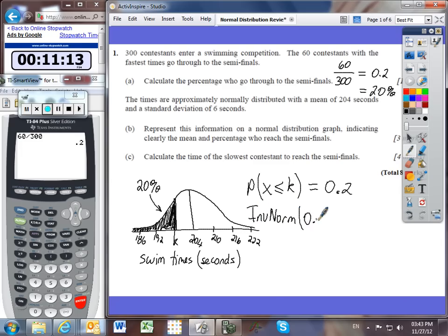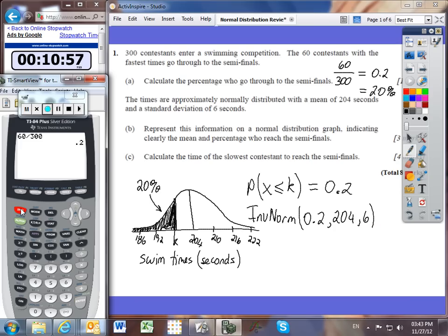We're trying to find the inverse norm of 0.2, and then our mean is 204 and our standard deviation is 6. So let's type this information into the calculator. Second vars, option 3, inverse norm. We've got a percentage of 20% or 0.2 because you should write it into inverse norm as a decimal. And then the mean after the comma is 204, comma, standard deviation is 6. And it gives us 198.95.